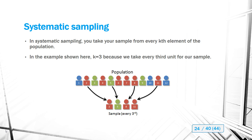Systematic sampling involves taking every kth element from the population. For example, if k equals 3, you randomly select a starting point — say the second element — then take every third unit from there: numbers 2, 5, 8, 11, and so on. That's systematic sampling.